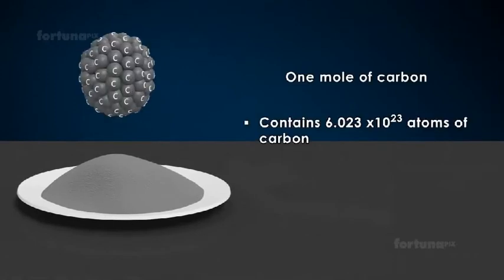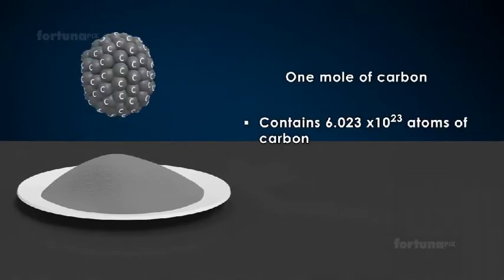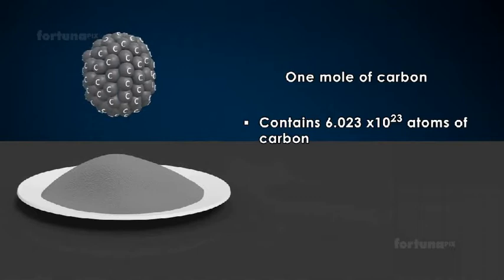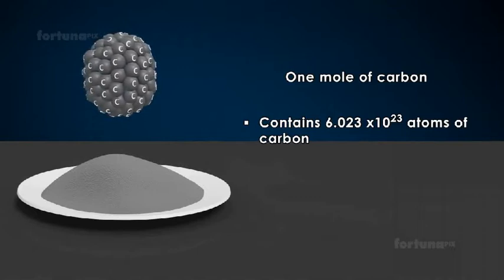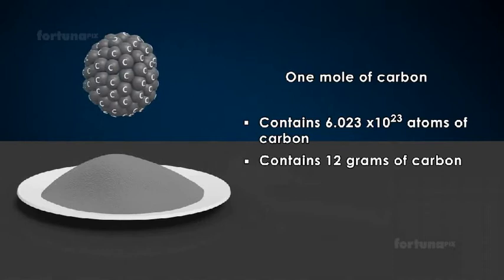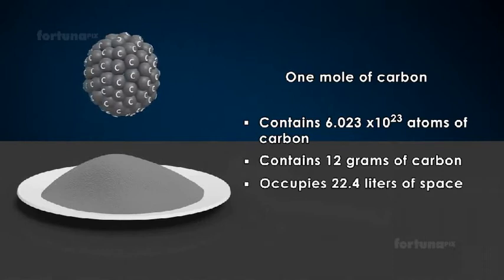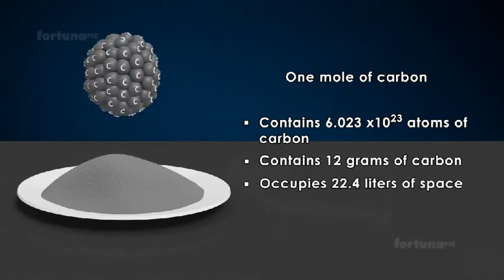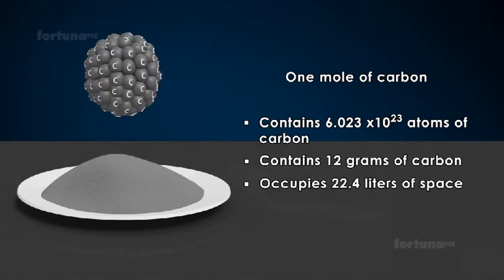Using carbon as our example, let's do a quick recap of the three principles of mole. One mole of carbon contains 6.023 × 10²³ atoms of carbon. One mole of carbon contains 12 grams of carbon. One mole of carbon occupies 22.4 liters of space at standard temperature and pressure.